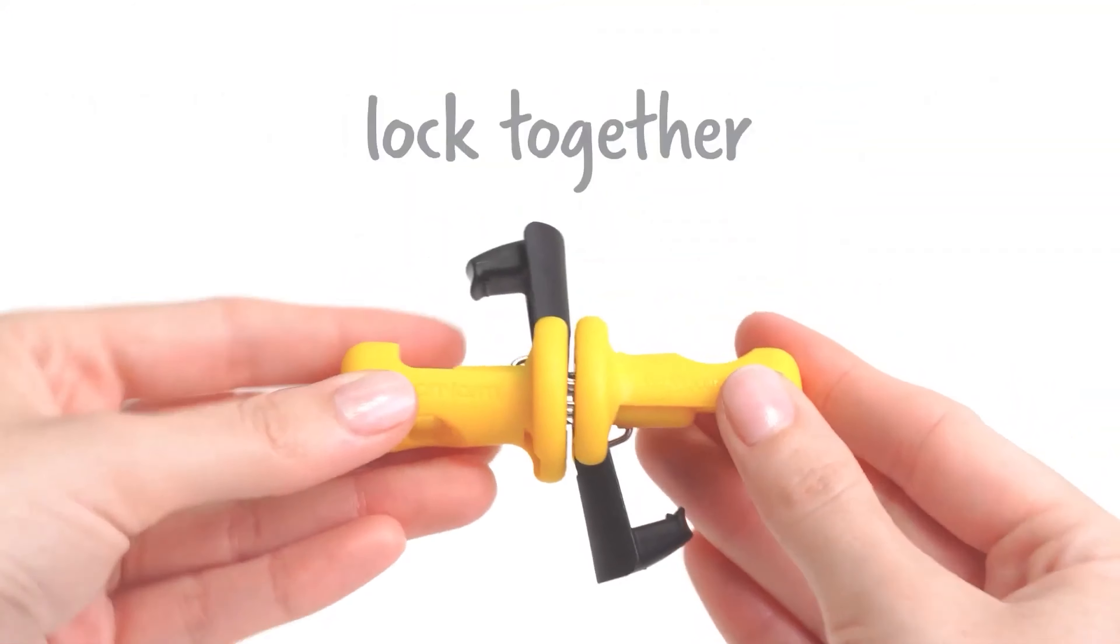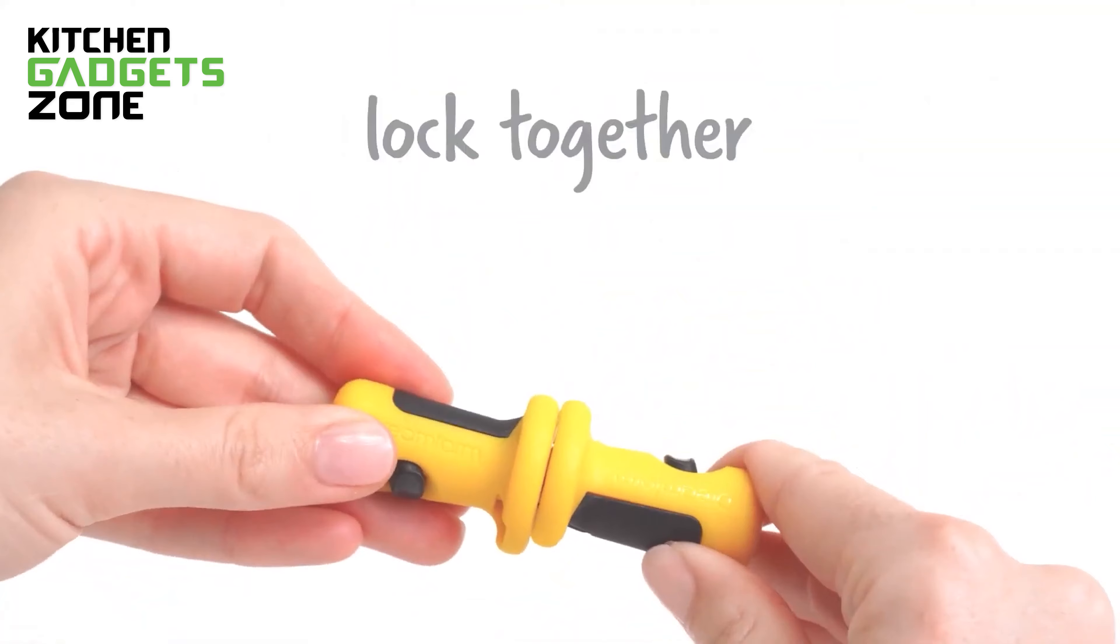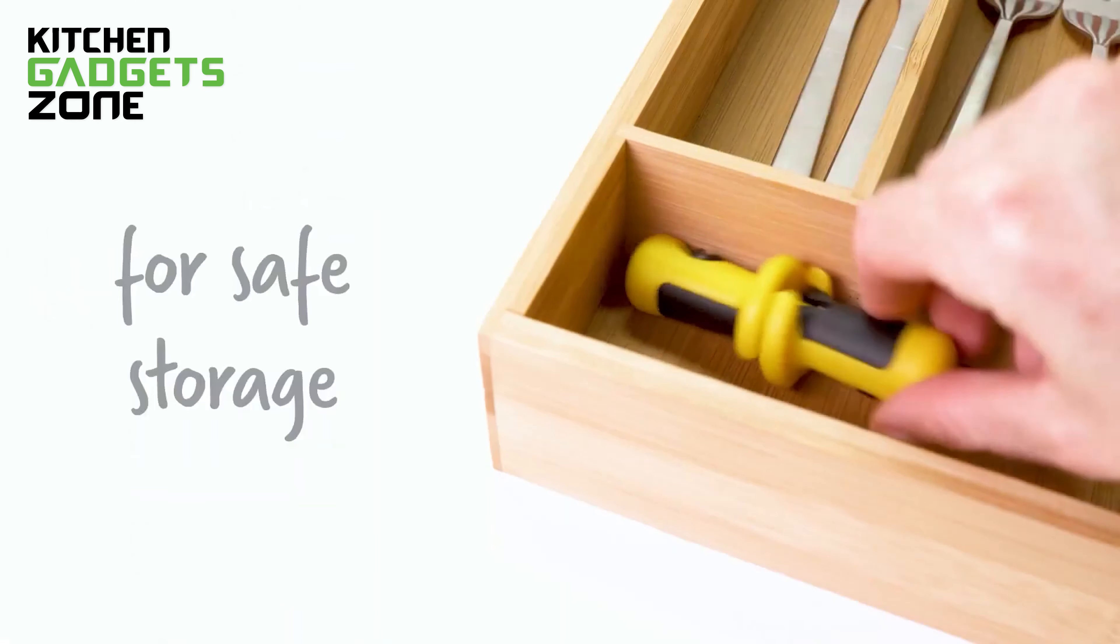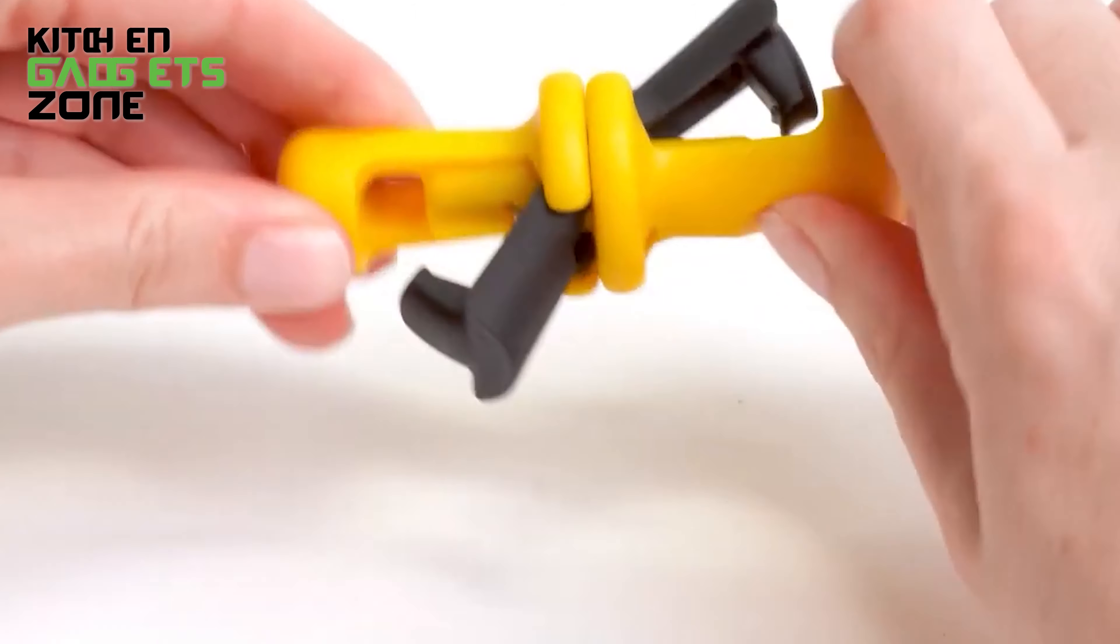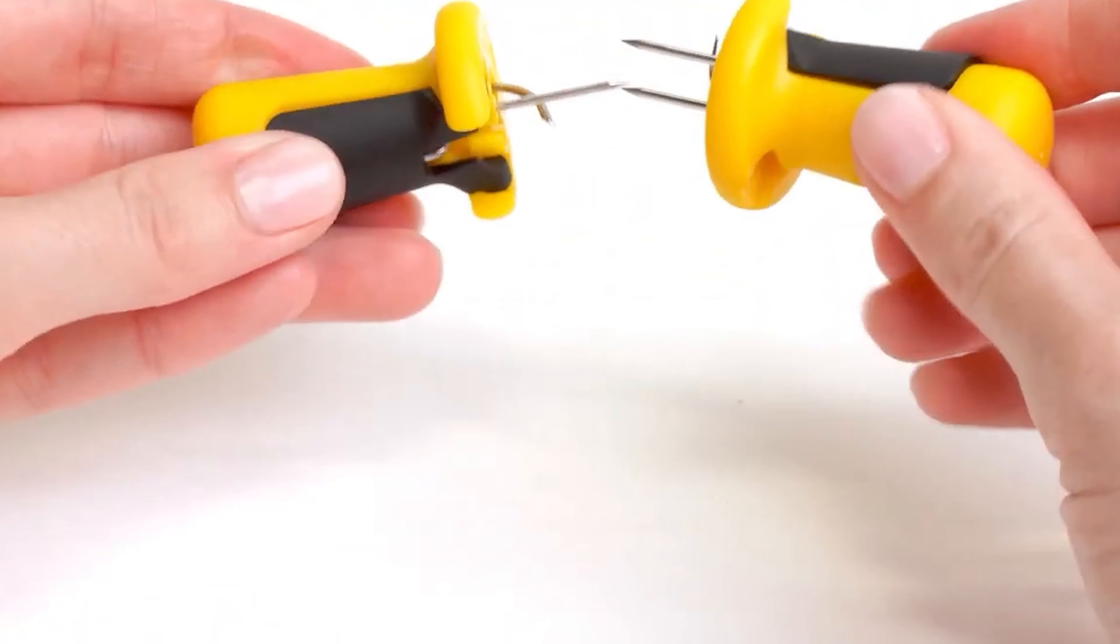Lockhorns interlock in pairs when not in use, safely staying together in your drawer to avoid loss and prevent injury. The intuitive locking mechanism can be popped open with one hand or locked closed to create a comfortable handle.